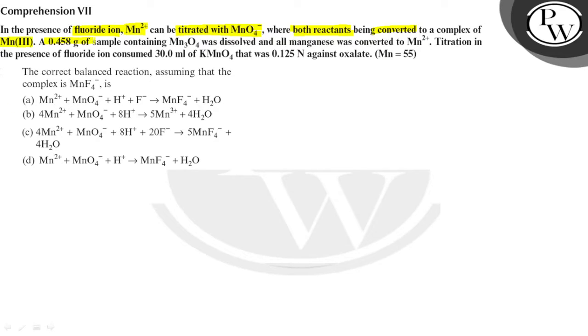A 0.458 gram of sample containing Mn3O4 was dissolved and all manganese was converted to Mn2+. This titration in presence of fluoride ion consumed 30 ml of KMnO4 that was 0.125 normal against oxalate.